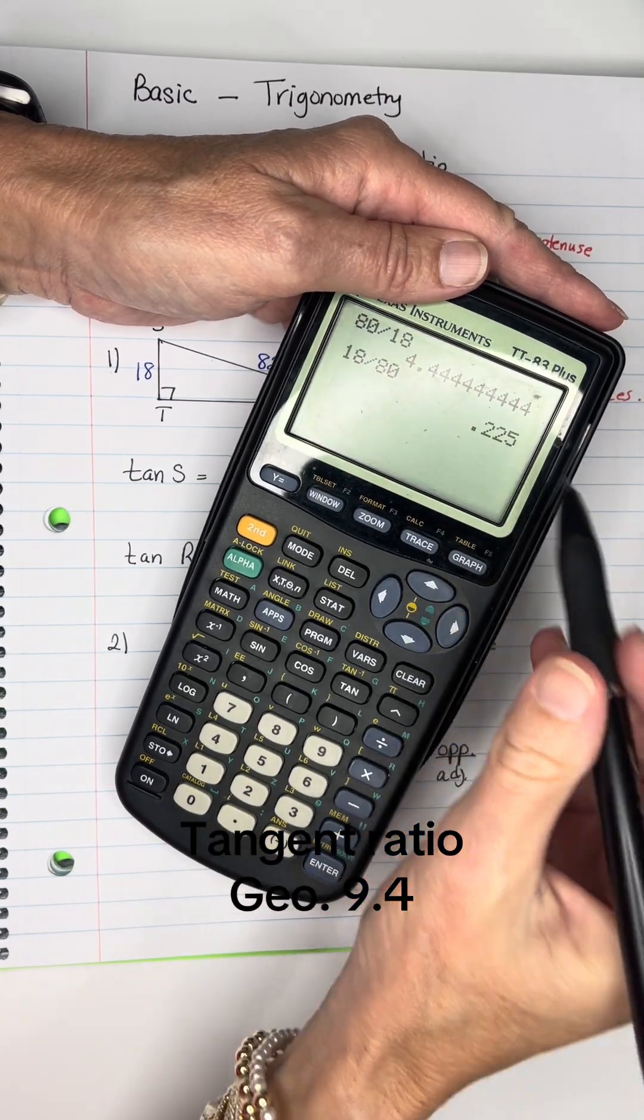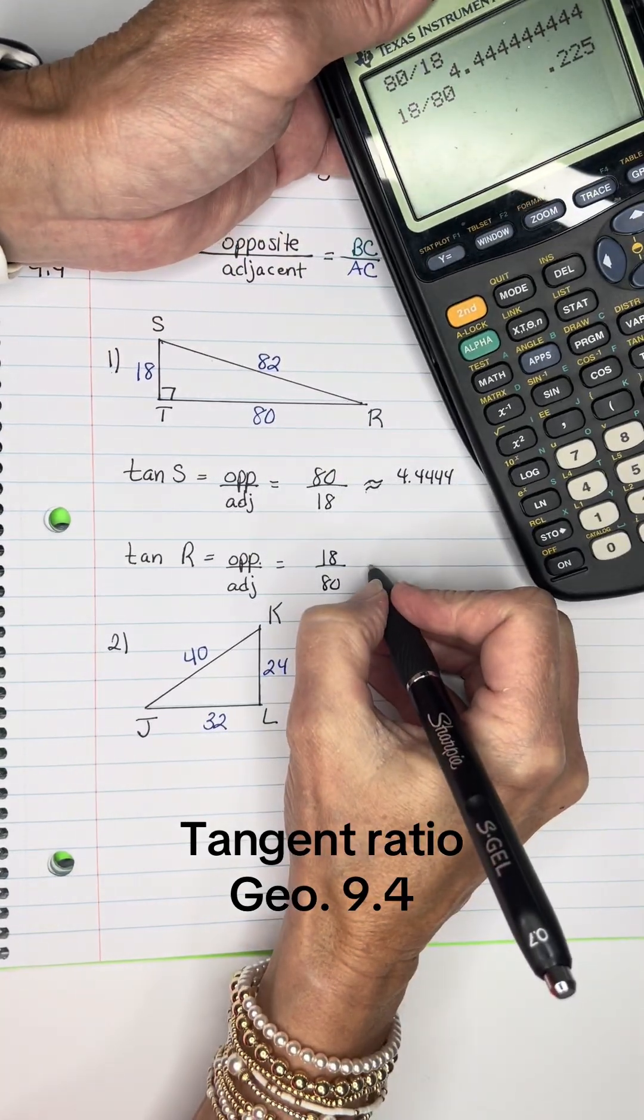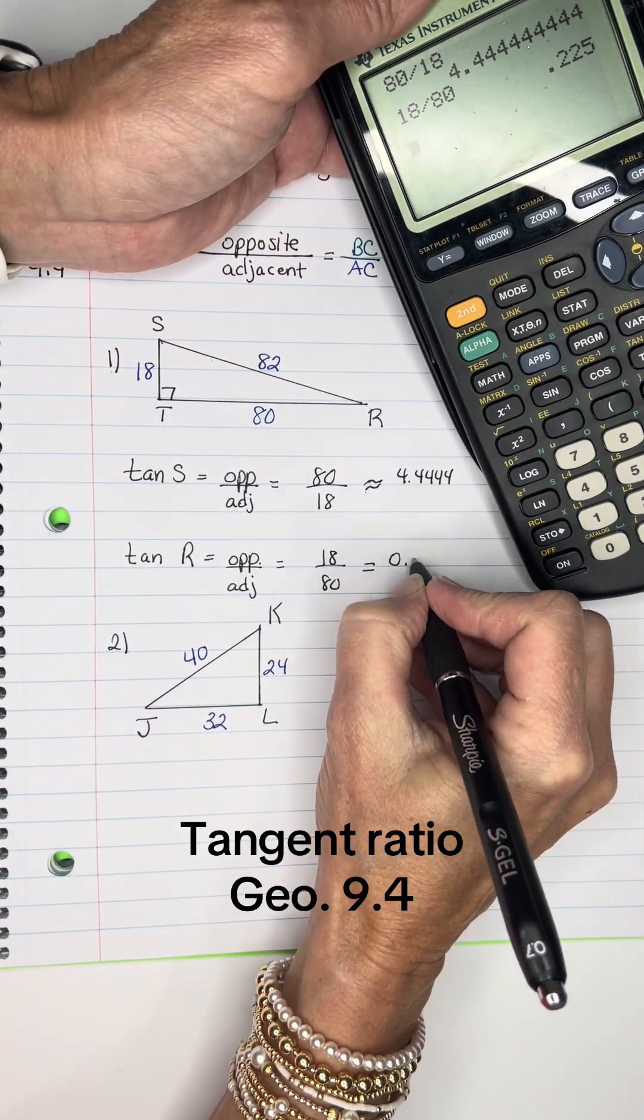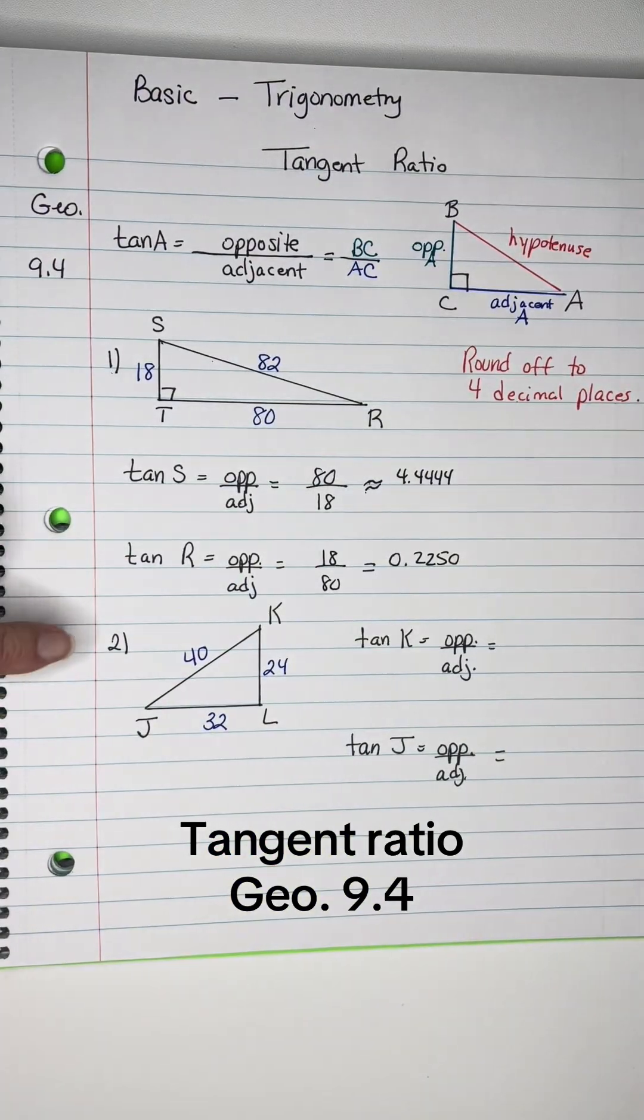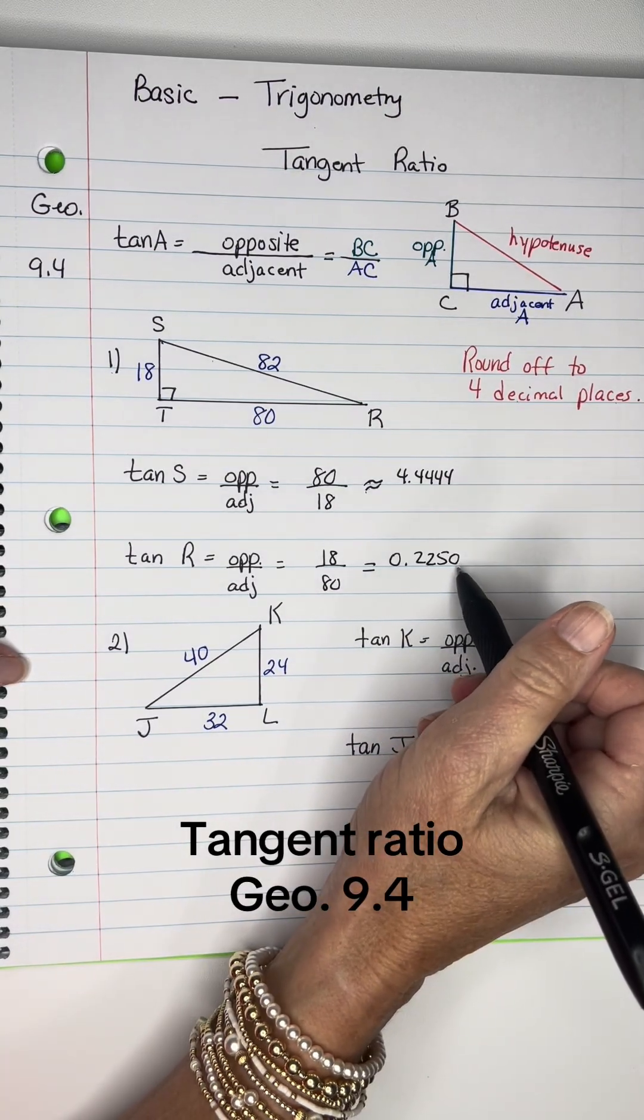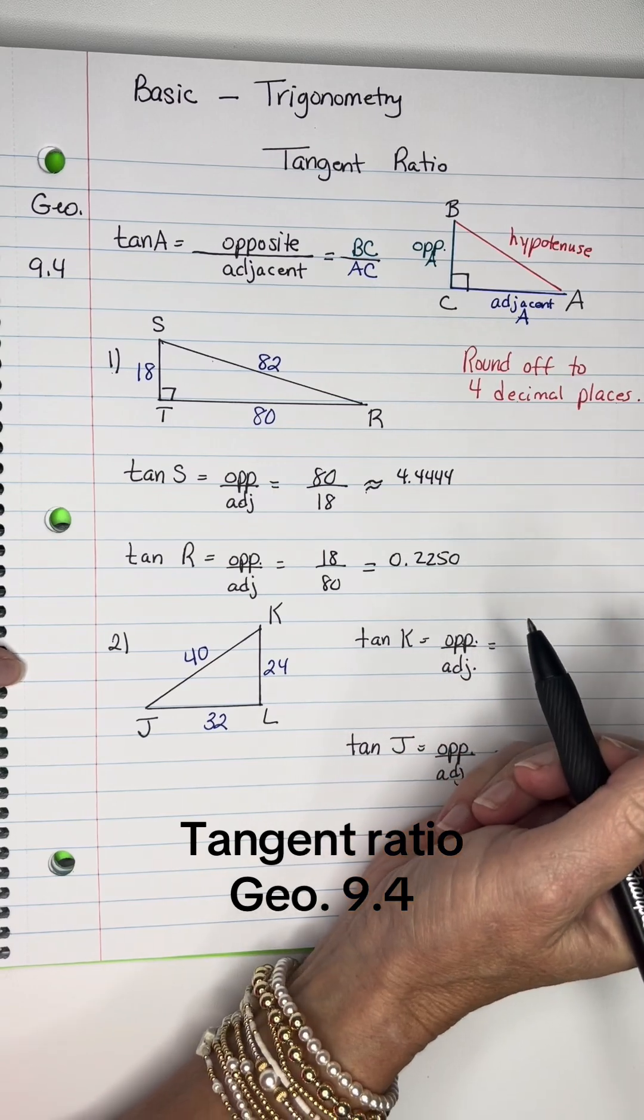This equals 0.225, which is exactly 0.2250. Since we need four decimal places, we add a zero in the fourth position.